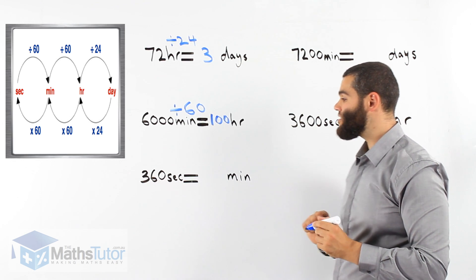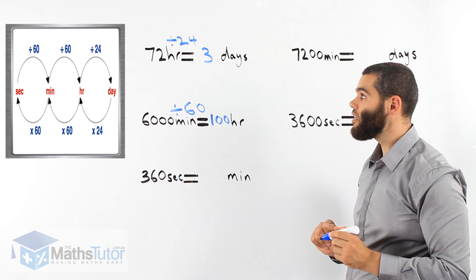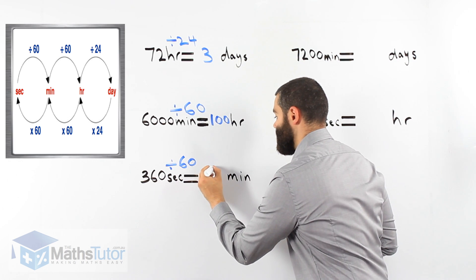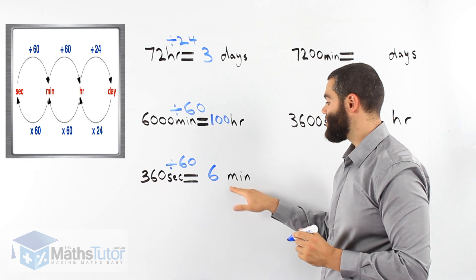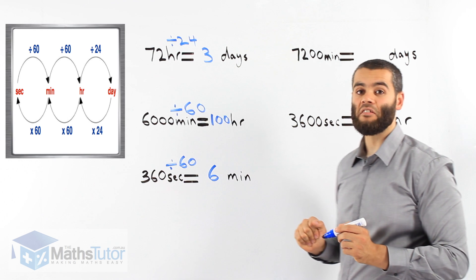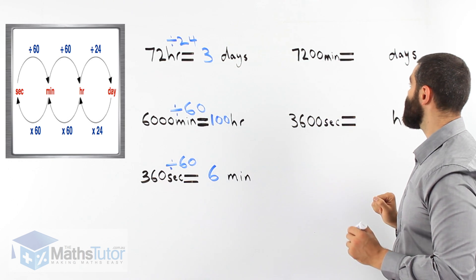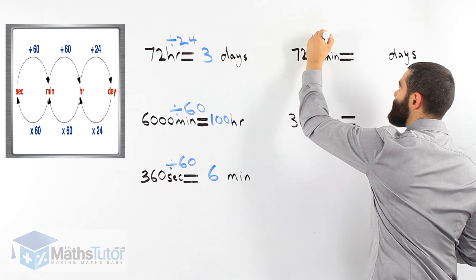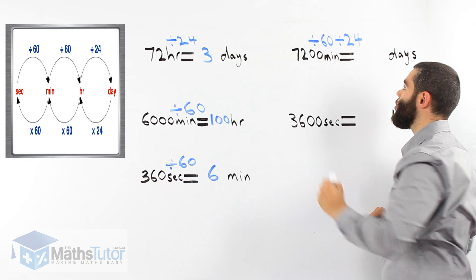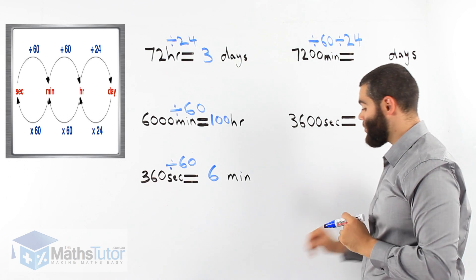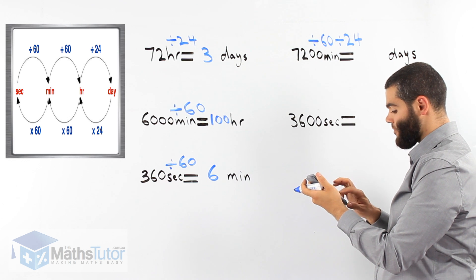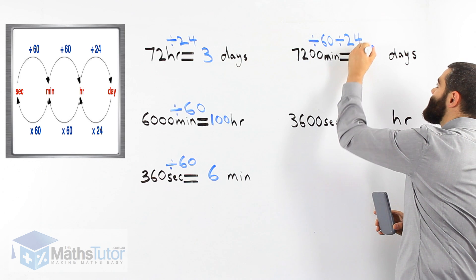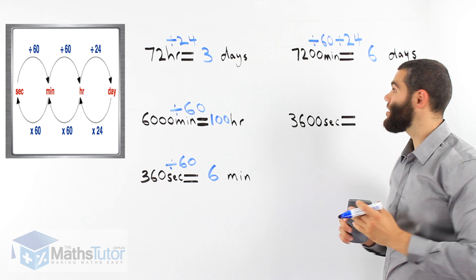This example: 360 seconds, converting to minutes. From seconds to minutes, we divide by 60. 360 divided by 60 — there are 360 seconds, which means 6 minutes. 6 minutes has 360 seconds in it. Here we're going from minutes to days: 7,200 minutes to days. We divide by 60 and then divide by 24. 7,200 divided by 60 divided by 24 gives us 5 days. In 5 days there are 7,200 minutes.